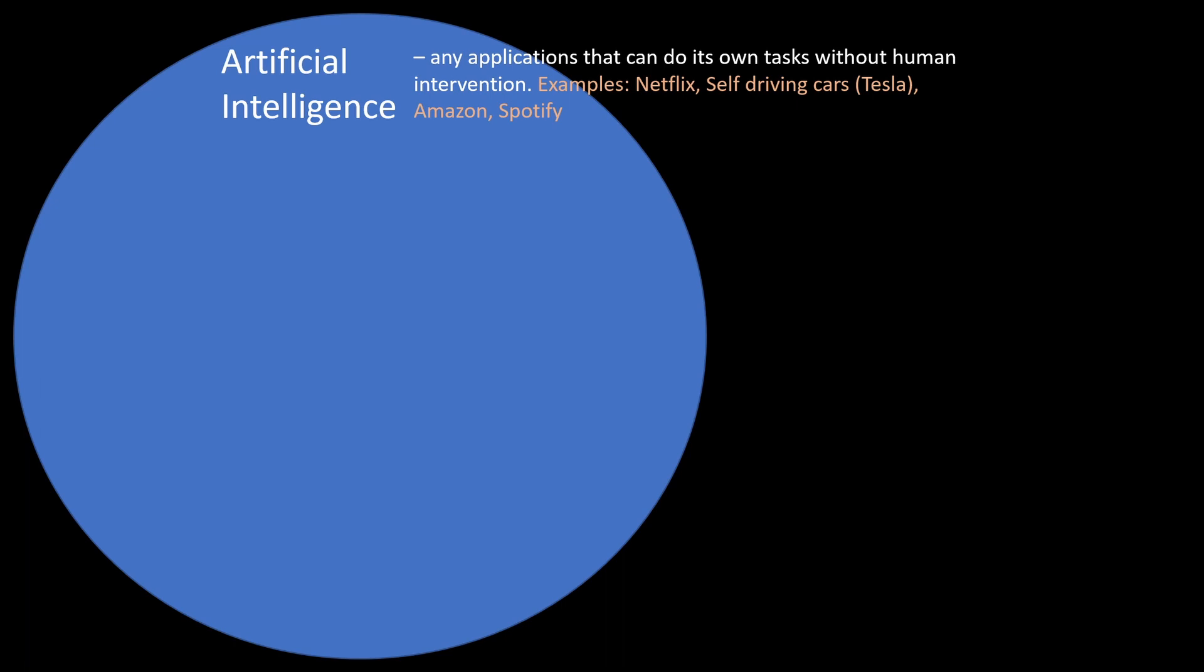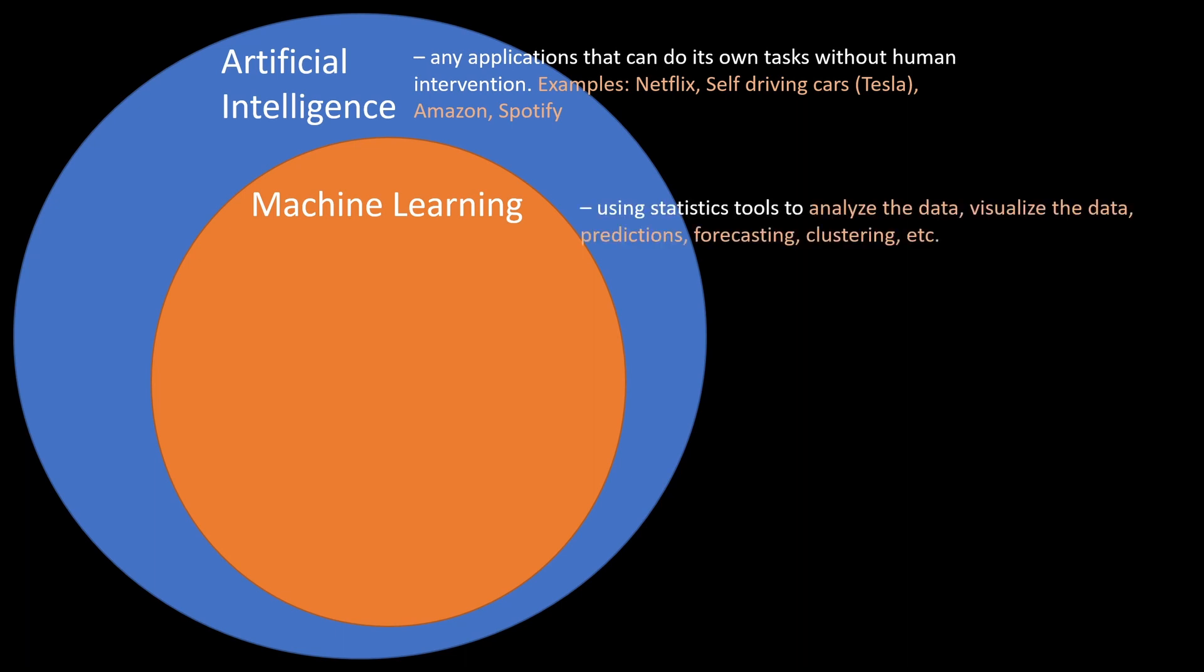And we have this huge orange circle within artificial intelligence, right? And you can say that this circle is around 90% of artificial intelligence. And this circle is what we call machine learning. I'm pretty sure you all know what machine learning is. But machine learning is basically using statistics tools to analyze the data, visualize the data,